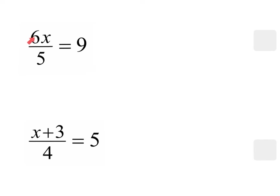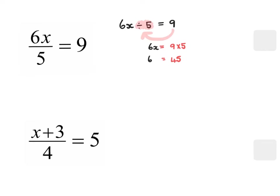In the first one we have 6 multiplied by x divided by 5 equals 9. I can rewrite this as 6x divided by 5 equals 9. Thinking about the working backwards method, instead of dividing by 5, when I work backwards I'm going to say 9 times 5, and 9 times 5 equals 45. So this means that 6x equals 45.